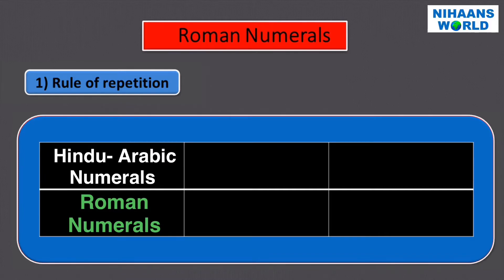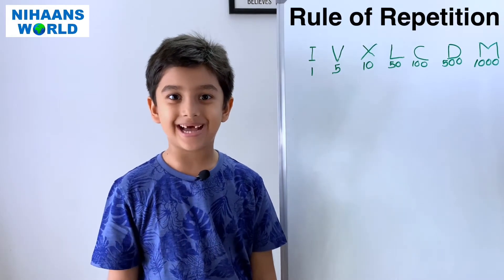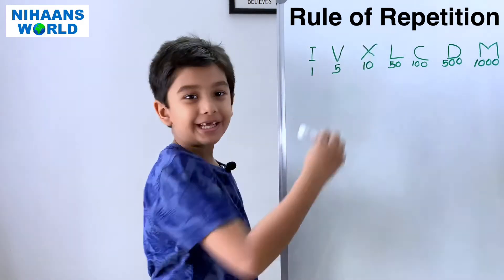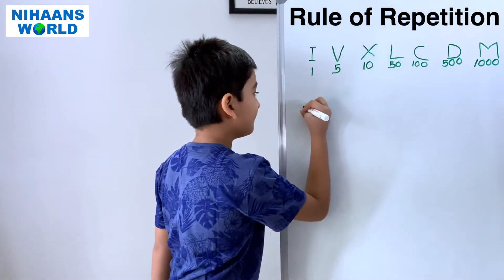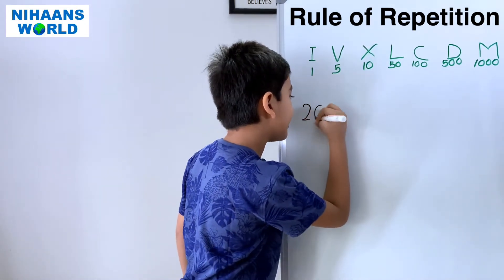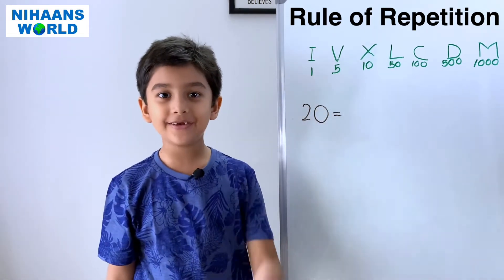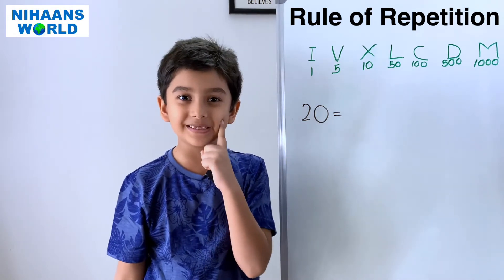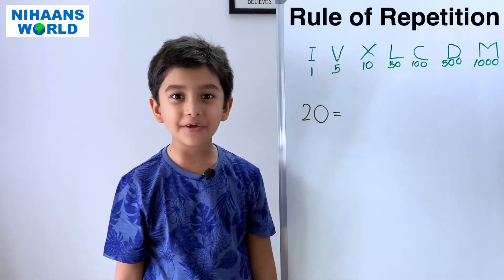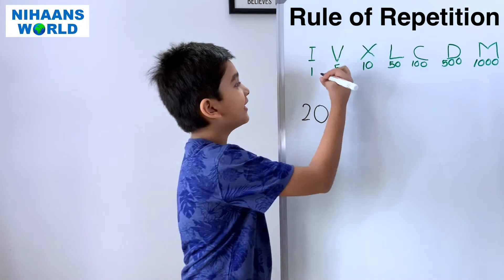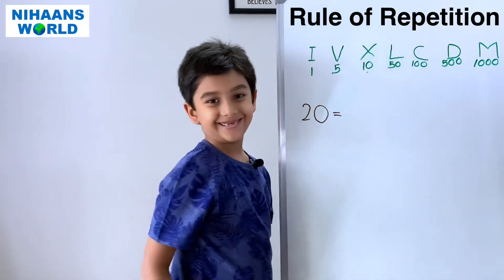This means that we do not write the number ten by repeating V, but as X. Let's see an example of the Rule of Repetition. Twenty is equal to—can you tell me how do we write ten in Roman numerals? Let's find it. Oh, here it is.